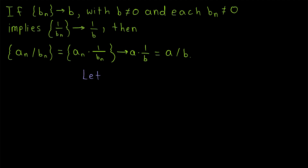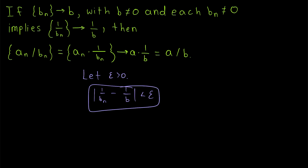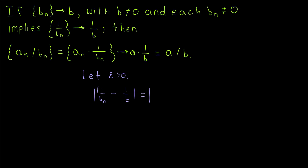Our proof will begin with an epsilon greater than 0. We'll need to set some value for big N. We know we'll have to show that the distance between terms of our sequence 1 over bn and the desired limit 1 over b is eventually less than epsilon. Let's try combining 1 over bn and minus 1 over b into the same fraction by giving them common denominators. We multiply 1 over bn by b over b, giving us b over b times bn. Similarly, we multiply 1 over b by bn over bn, giving us minus bn over b times bn. Bringing those together gives us the absolute value of b minus bn divided by b times bn.